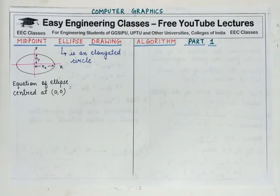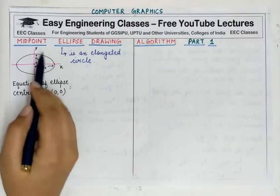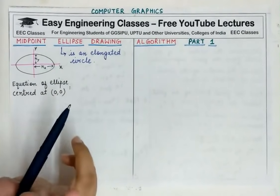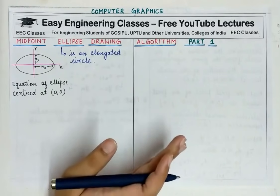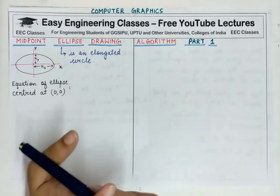First of all, we need to know that ellipse is another form of a circle. If we stretch a circle in one direction, then we call the resulting figure an ellipse. For the ellipse, we need to know two things: it has two axes. One is the Major Axis and one is the Minor Axis.